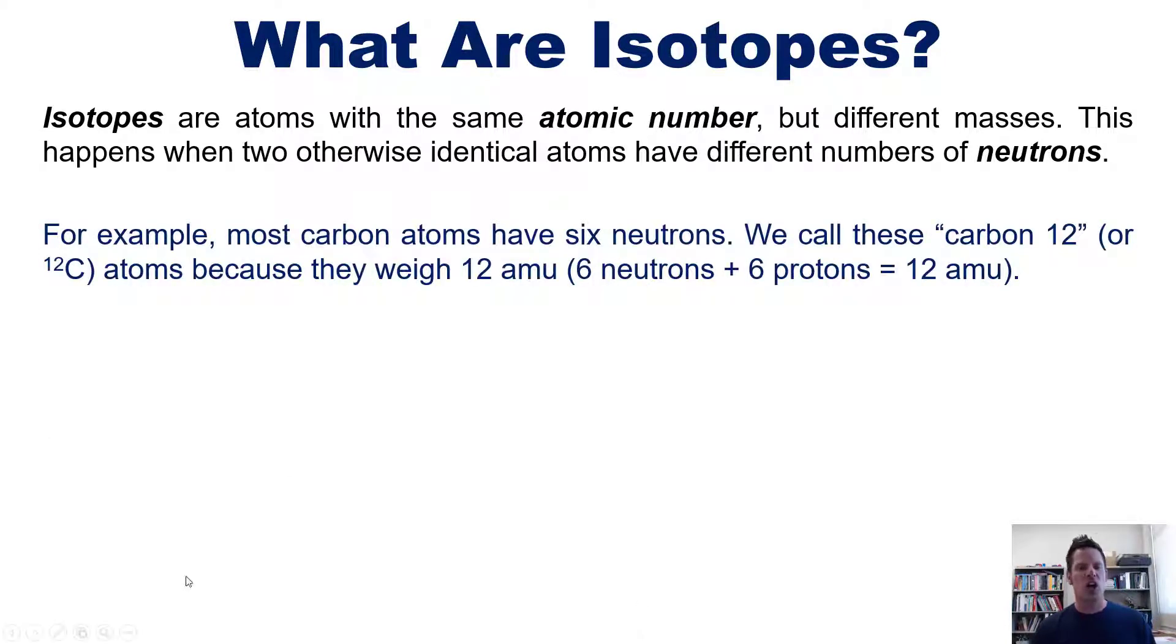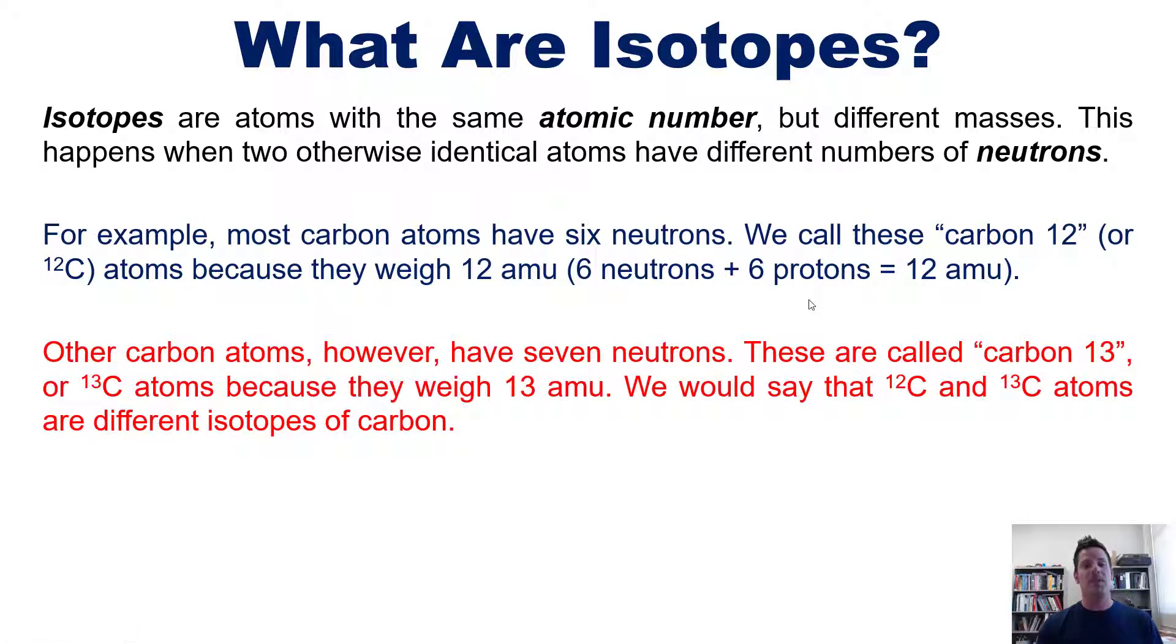For example, most carbon atoms have six neutrons. We call these carbon 12 or C12 atoms, because they weigh 12 AMUs - 6 neutrons plus 6 protons equals 12 AMUs. And carbon has an atomic number, or number of protons, equaling 6. Other carbon atoms, however, have 7 neutrons. These are called carbon 13 or C13 atoms, because they weigh 13 AMUs.